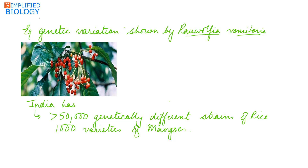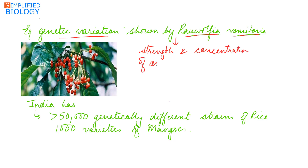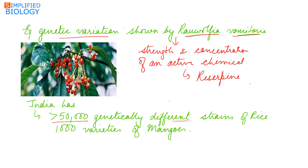An example of genetic diversity is the genetic variation shown by Rauwolfia vomitoria, a medicinal plant growing in different regions of the Himalayas. The variation might be due to the strength and concentration of an active chemical — reserpine — produced by the plant. India has more than 50,000 genetically different strains of rice and about 100 varieties of mangoes.